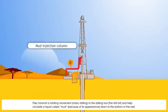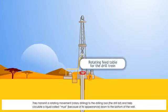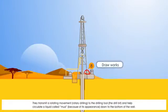These drill strings are made up of metallic tubes screwed end to end. They transmit a rotating movement, rotary drilling, to the drilling tool, the drill bit, and help circulate a liquid called mud, because of its appearance, down to the bottom of the well.